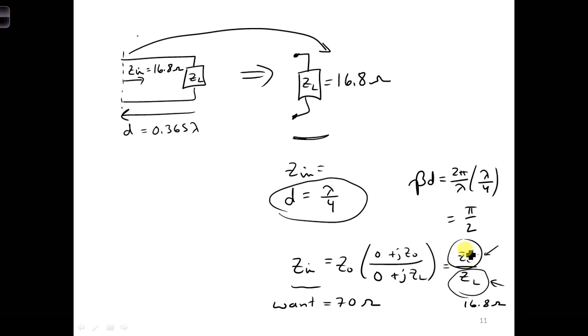The characteristic impedance of the quarter wave transformer. If we rearrange the equation and solve for Z naught, the characteristic impedance of the quarter wave transformer, we get Z naught equals the square root of Z in times ZL, and that would equal 34.3 ohms.